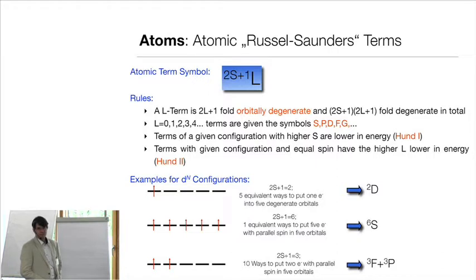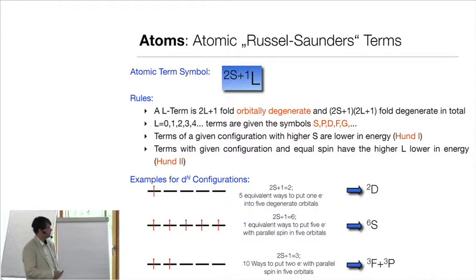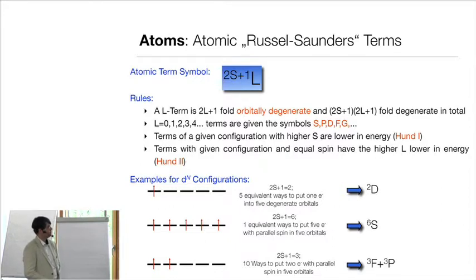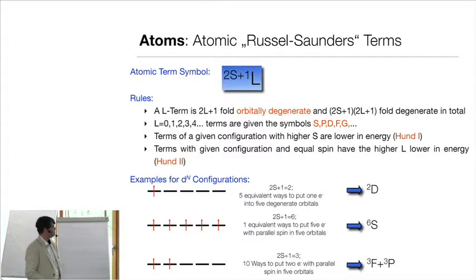That seems like a lot to learn, and you don't have to know it by heart — you can look it up. One helpful fact is that holes create the same terms as electrons: if you have nine electrons instead of one, that creates the same doublet D term as the one-electron case. Whether you think about holes or electrons is up to you; I personally prefer electrons because I can picture them more easily.